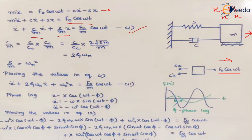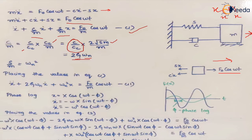For c/m, we multiply numerator and denominator by the critical damping coefficient c_c, which can be written as 2√(s/m). The ratio c/c_c is denoted by zeta (ζ), the damping ratio. Since ω_n = √(s/m), we get c/m = 2ζω_n, and s/m = ω_n².